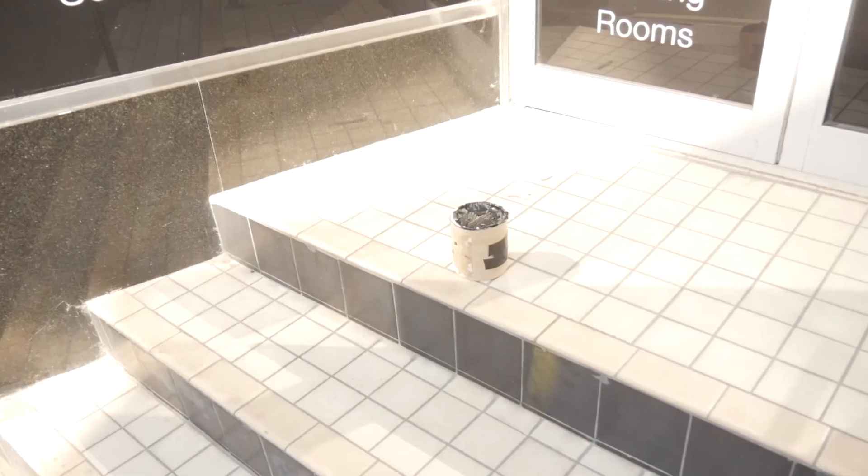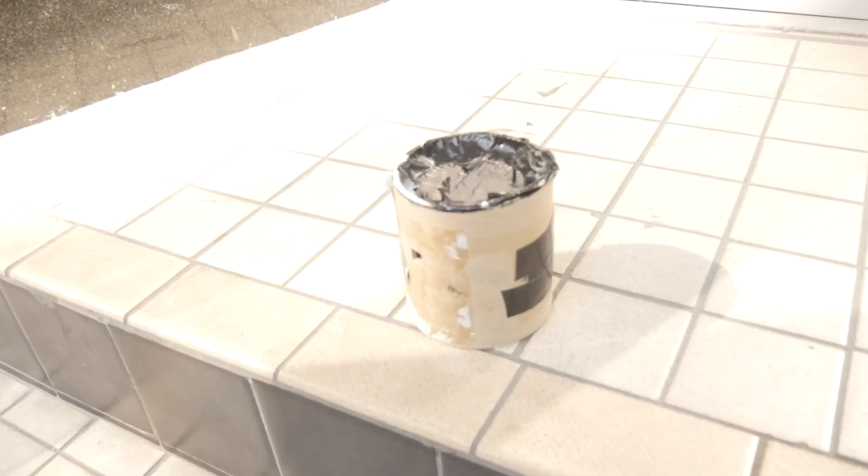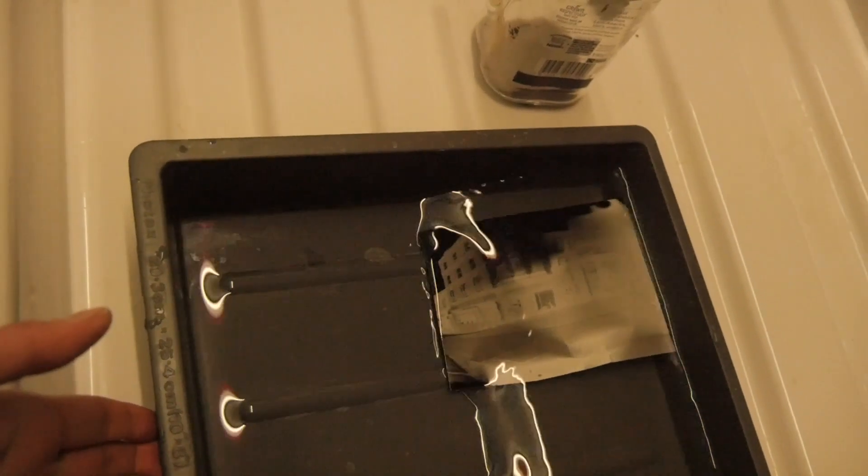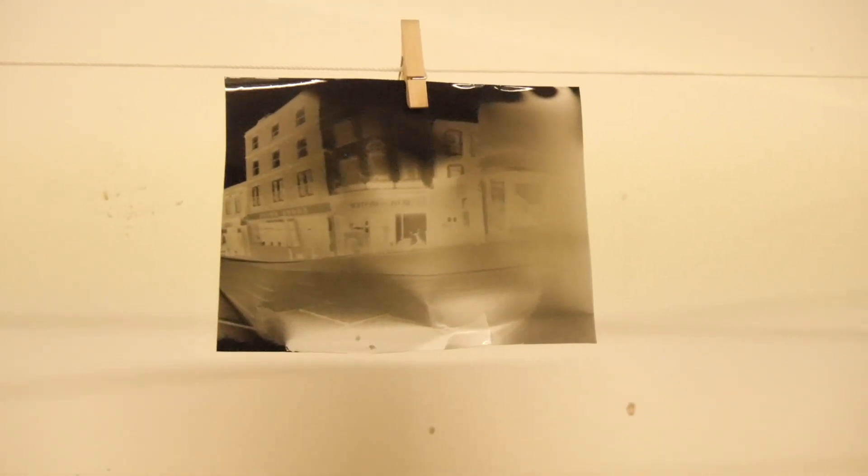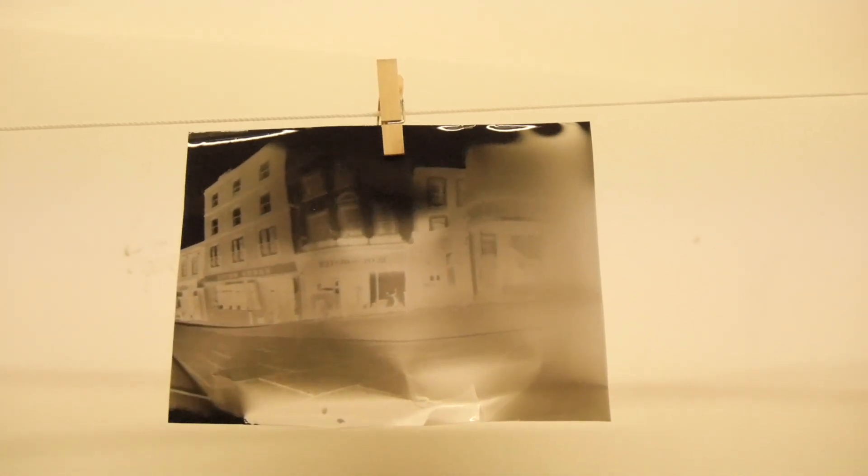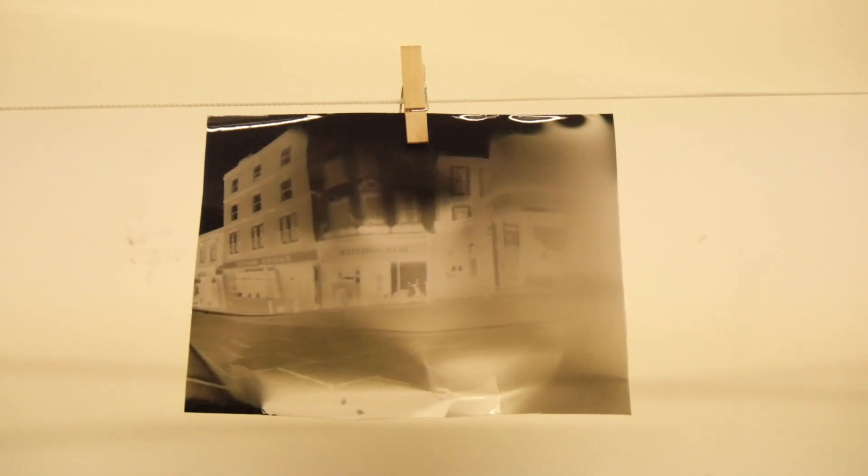I used standard Ilford multigrade paper developer, stop which was water and photographic fixer as I would usually do in the darkroom. And here is my negative image which was exposed for 20 seconds. You put the paper in the developer for 2 minutes, the stop or the wash for 30 seconds and then fix in rapid fix for 2 minutes before washing for 10 minutes and hanging up to dry. You can also use the Caffenol paper developer which was seen in my last video but this will take a long time to develop.